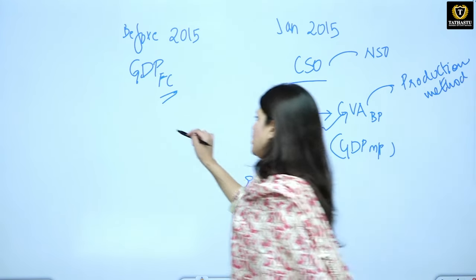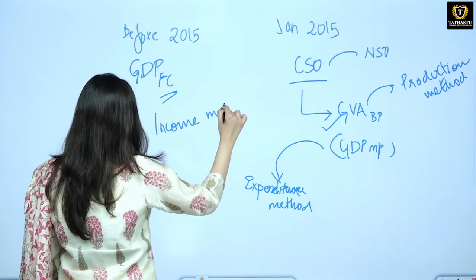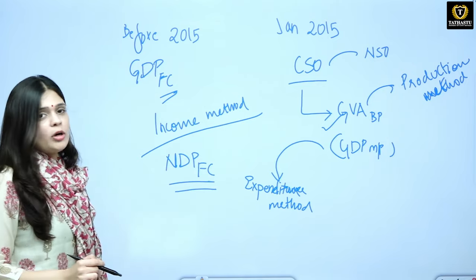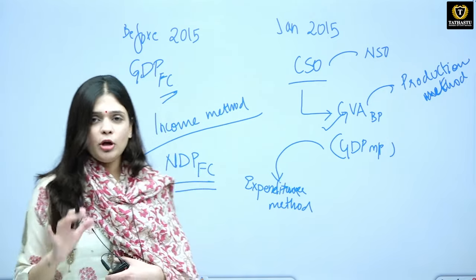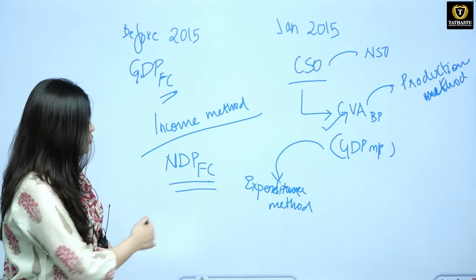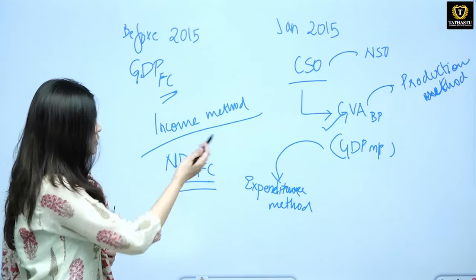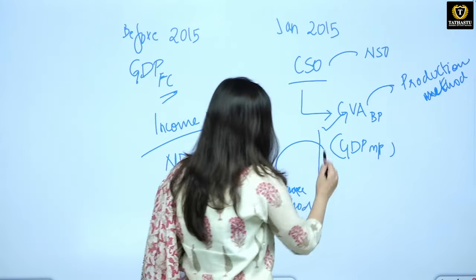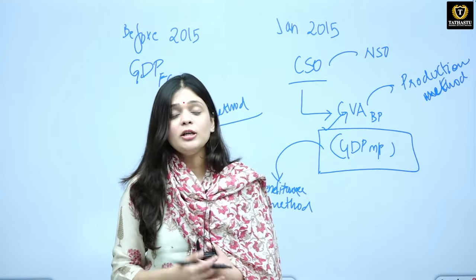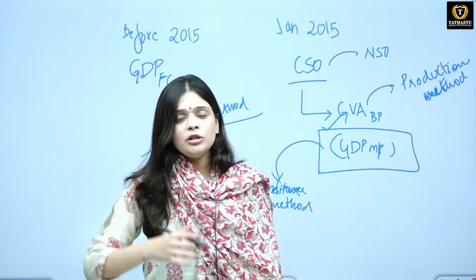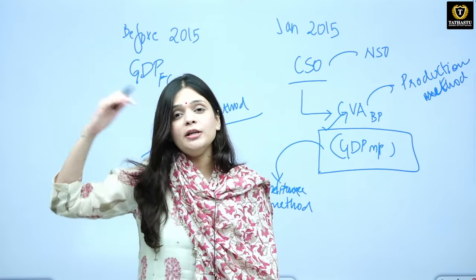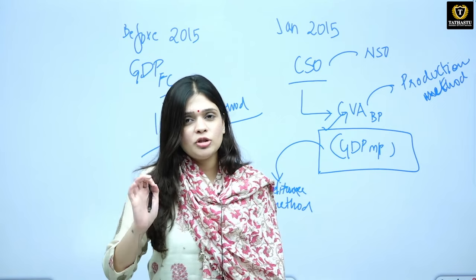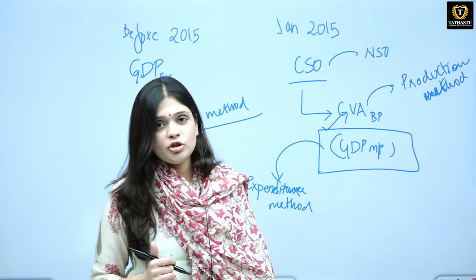Using the income method, we are actually finding out NDP at FC — Net Domestic Product at Factor Cost. We convert it into NNP at MP, and then we have GDP at MP and GVA at BP. Our national income is actually GDP at MP, so when we find out national income, we find it at market prices. This change was made so that our GDP can be compared at the international level with other countries, by following the System of National Accounting 2008 — the international standard set by the United Nations.